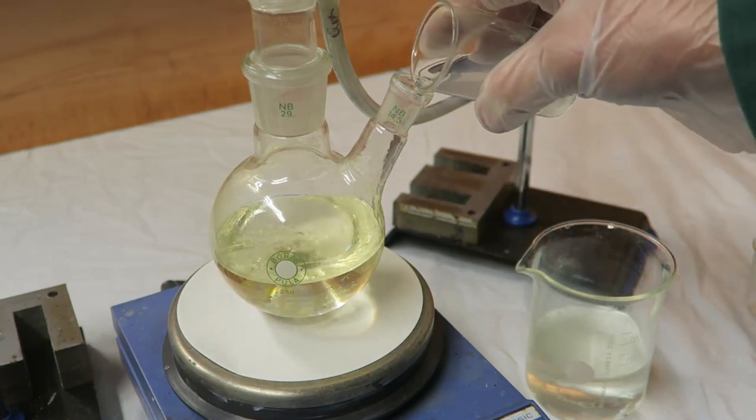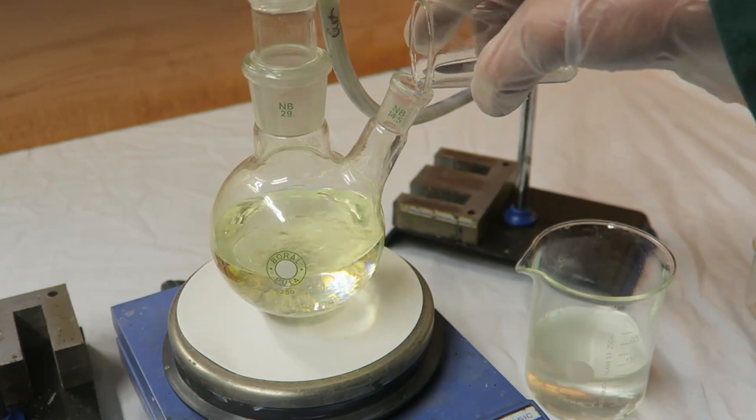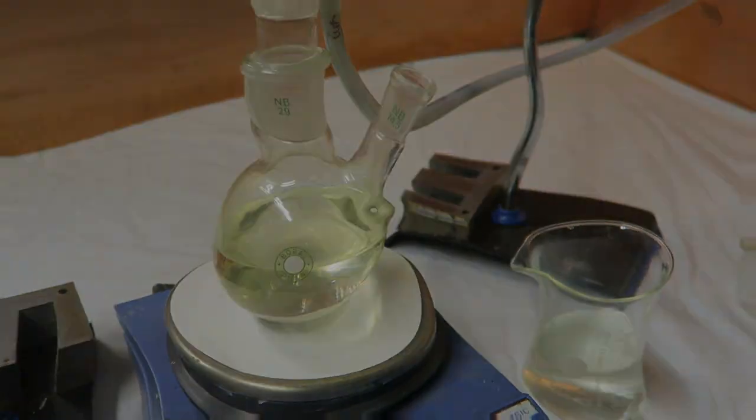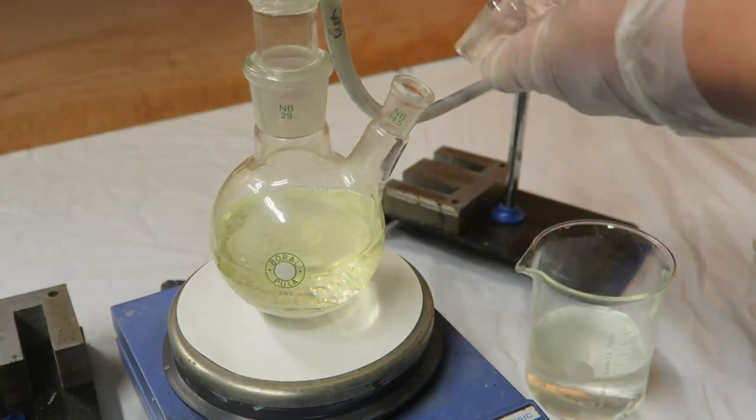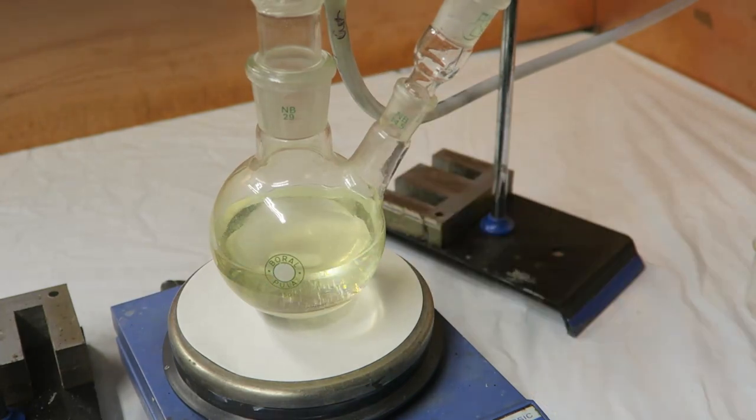Next, 0.1 mole of potassium hydroxide are dissolved in a minimum amount of water and is added to the flask. Also, I've added a stirrer.